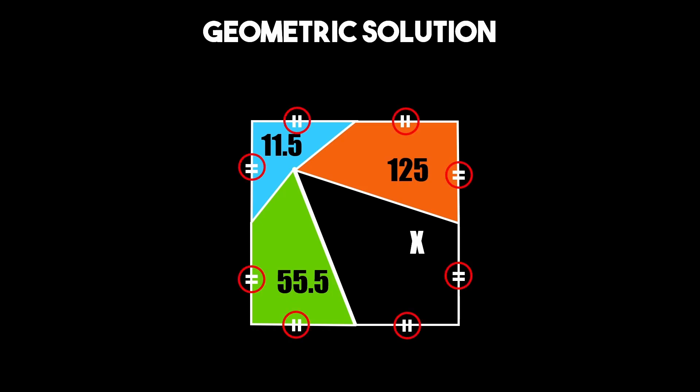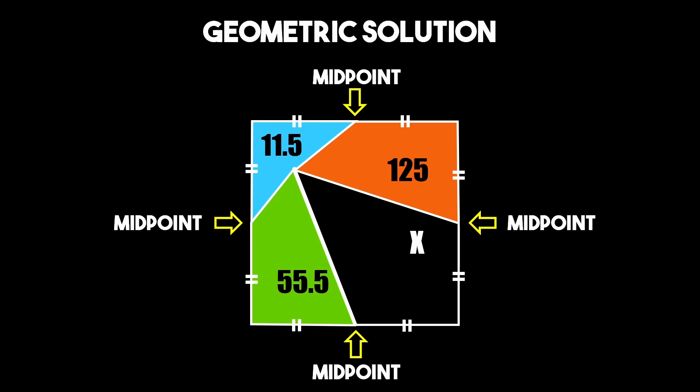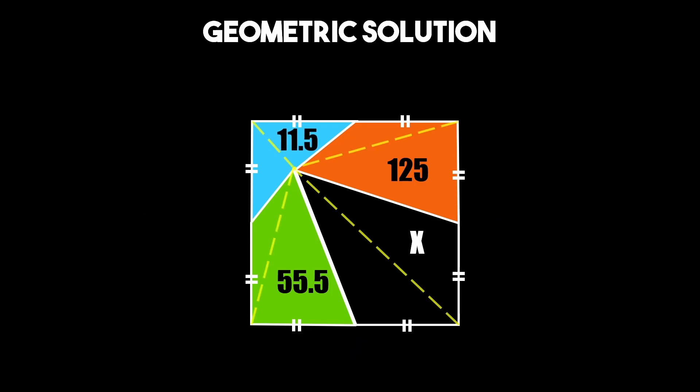As we saw before all of these segments have the same length which means these lines inside the square intersect the sides at their midpoints. As a result we can use this symmetry to our advantage by drawing lines from the corners of the square to the point where the lines connect.